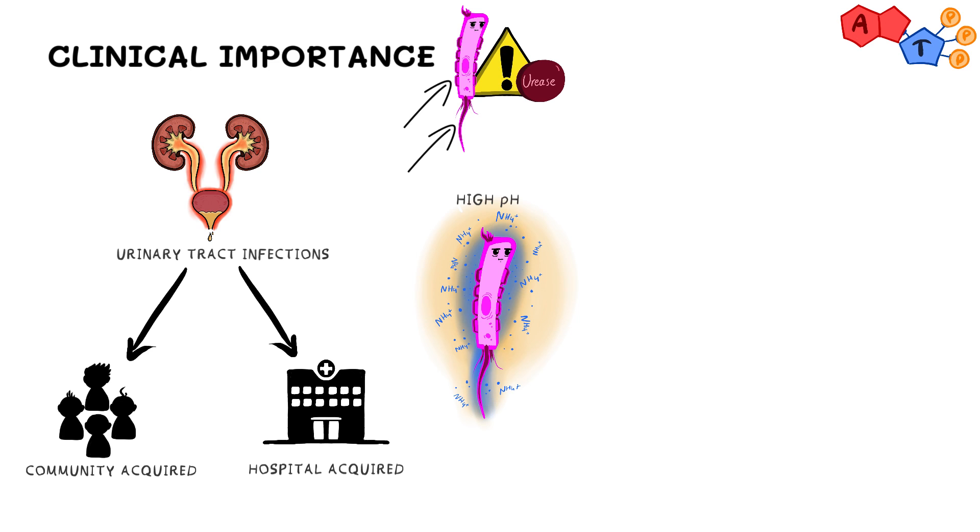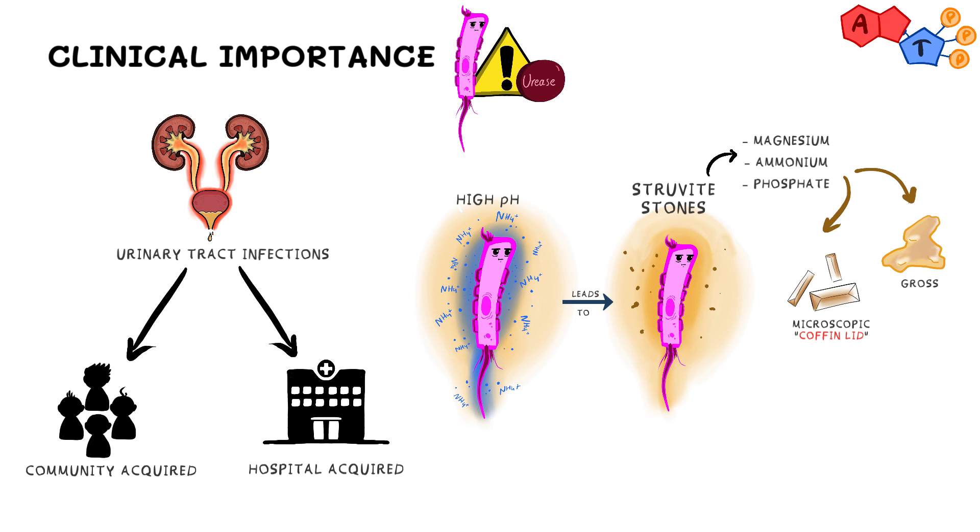Not only does this alkaline urine facilitate the survival of Proteus, it also promotes the formation of kidney stones called struvite, which are composed of magnesium, ammonium, and phosphate. These struvite stones often manifest as staghorn calculi in the renal pelvis. Calculi is another name for kidney stones.